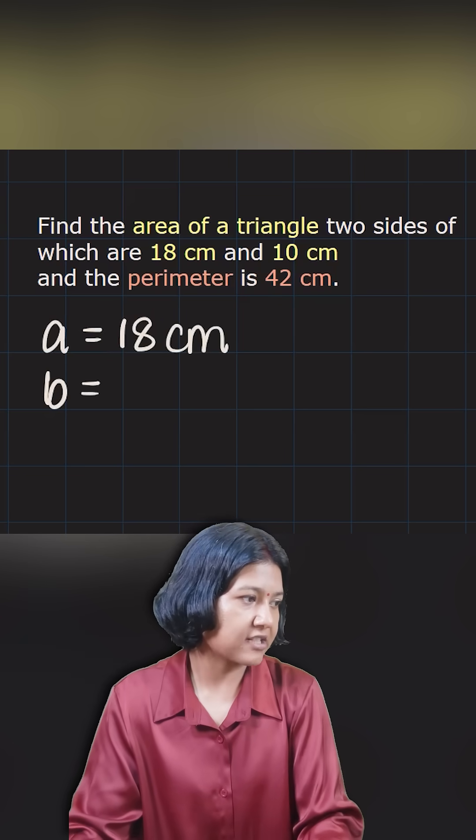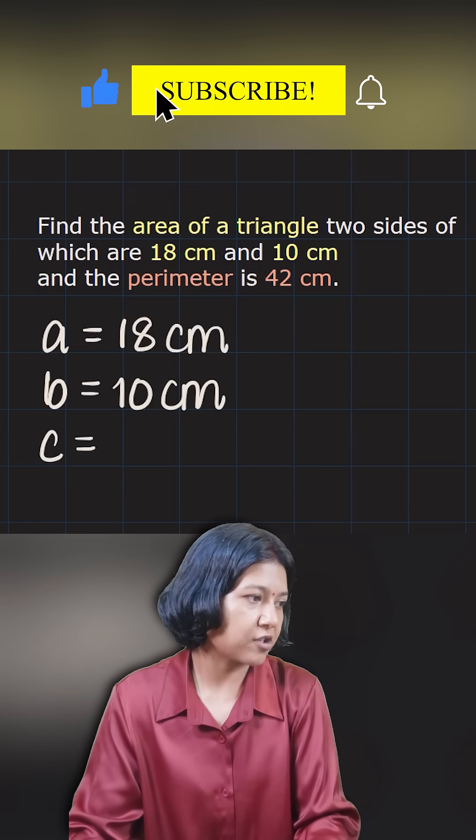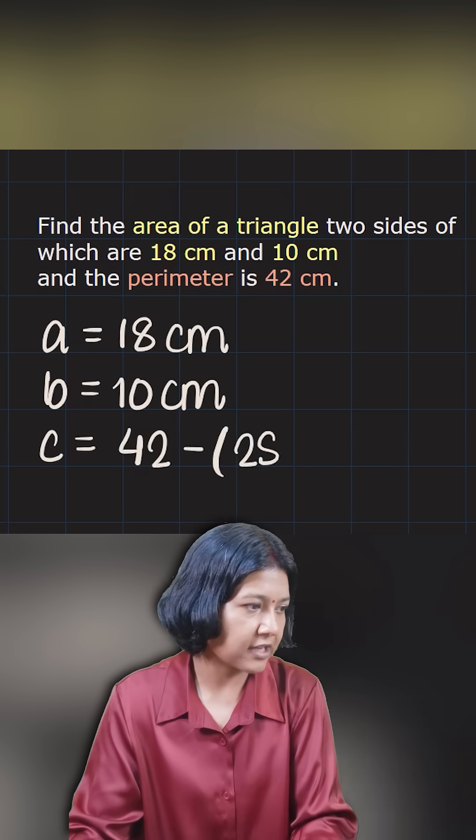I've been given the second side is 10, and now you have to find the third side provided you know the perimeter. Perimeter is 42, so you want to subtract the sum of the two. The sum of the two here is 28. If you remove 28 from 42, it gives you 14 centimeters.